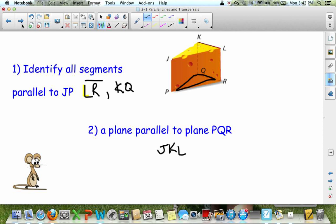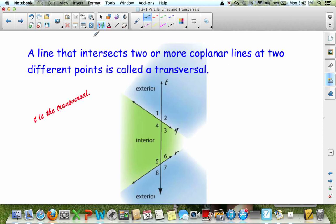Now another vocab word is transversal. And T is the transversal here. Transversal intersects two or more coplanar lines at two different points. So here's two lines. They don't have to be parallel lines. But they do have to intersect two coplanar lines is a transversal.